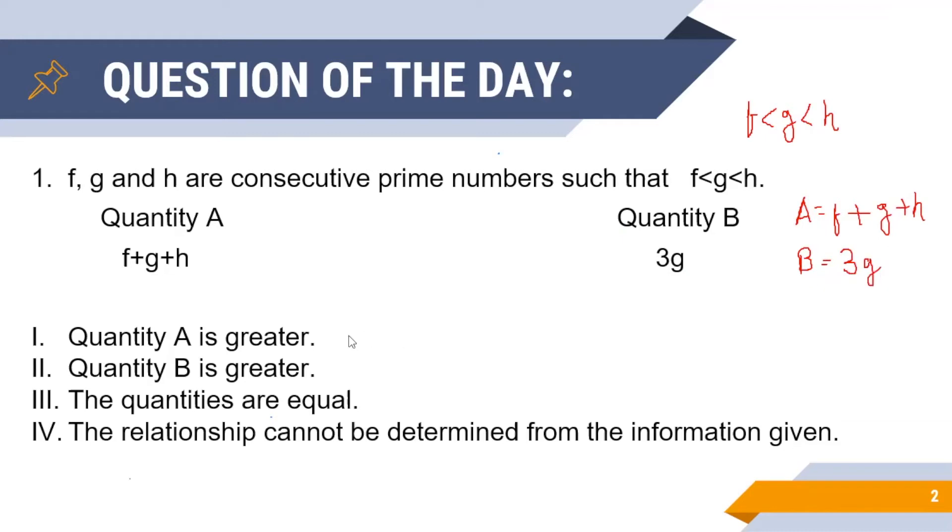Next we are asked to determine if A is greater than B in all cases that is option one, or if B is greater than A in all cases that is option number two, or if the two quantities A and B are equal that is option number three, or if the relationship cannot be determined from the information given.